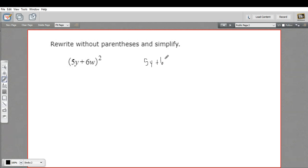So we could rewrite this as 5y plus 6w times 5y plus 6w and then we can just apply FOIL where you multiply the first terms, the outside terms, the inside terms and then the last terms and then you combine any like terms.